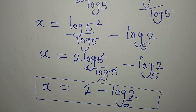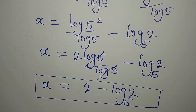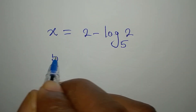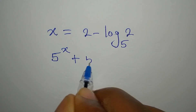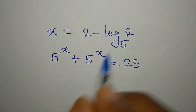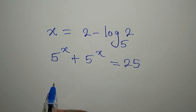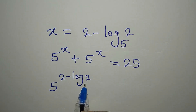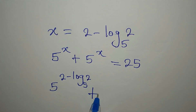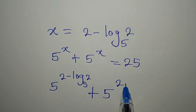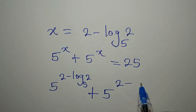Since we don't want anything in decimal form, let us verify. The equation is 5 to the power of x plus 5 to the power of x equals 25. In place of x, I'm going to write the whole value, so we're having 5 to the power of (2 minus log 2 to base 5), plus the other 5 to the power of (2 minus log 2 to base 5).